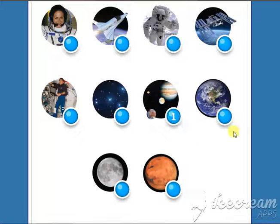Two. We all live on this planet. Three. This person travels to and works in space. Four. Astronauts travel to space in this. Five. Astronauts live here in space.